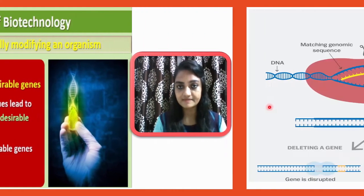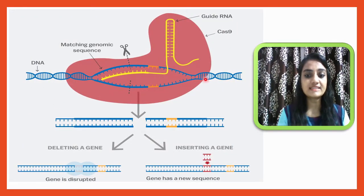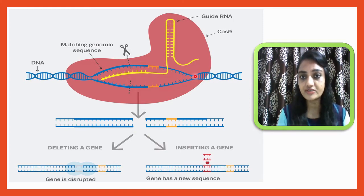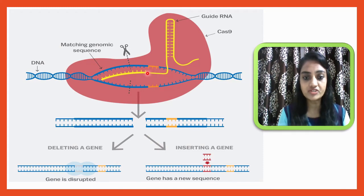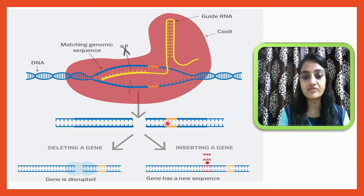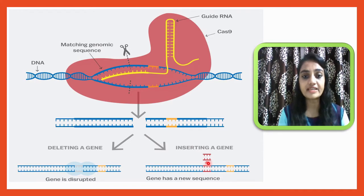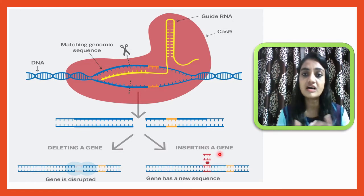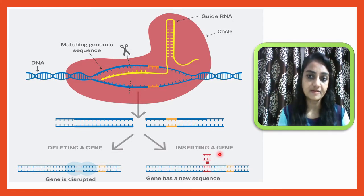Suppose this is a DNA fragment — the yellow-colored gene represents the desirable gene. You have to identify and cut only that portion of the DNA fragment. Otherwise, undesirable genes may be inserted too. Without identification, you cannot insert the correct gene into another organism, as undesirable genes may also be expressed.